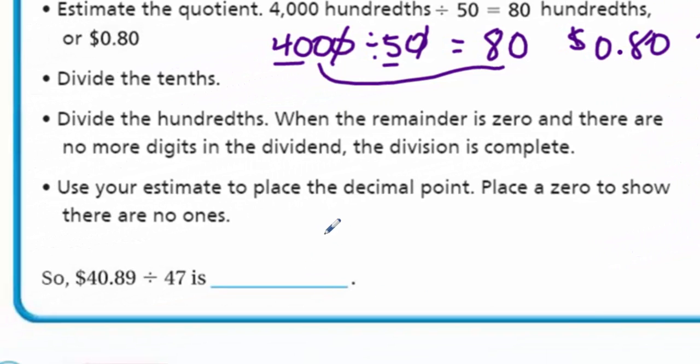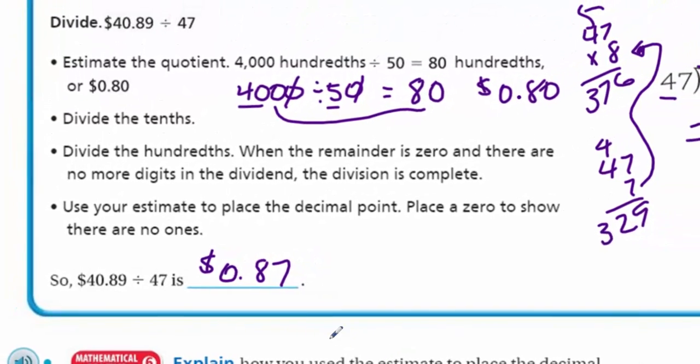This is, I guess, the steps, right? Divide the hundred. So the remainder is zero. And there are no more digits. The dividend. The division is complete. Use your estimate to place a decimal point. Place a zero to show there are no ones. All right. And that's what we'll do. So this was money. So I need to write it as such. So the exact answer was eighty seven cents. Our estimate was about eighty. So checking my work thinking. Yeah, it seems pretty reasonable.